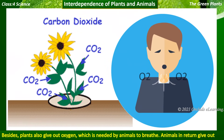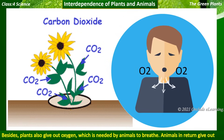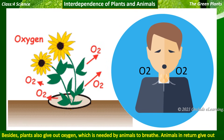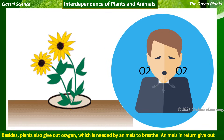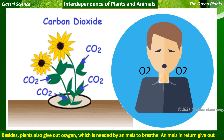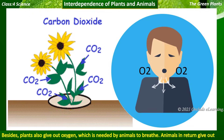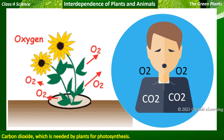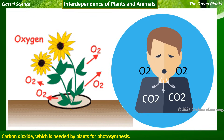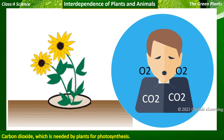Besides, plants also give out oxygen which is needed by animals to breathe. Animals in return give out carbon dioxide, which is needed by plants for photosynthesis.